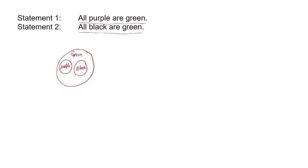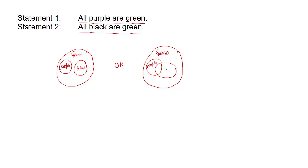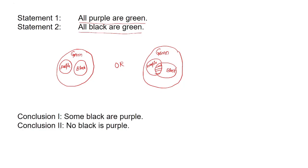None of the statements specify whether there are any common elements between purple and black. So we can draw the Venn diagram with purple and black completely separate inside green, or we can draw it with some overlap between purple and black — where the shaded area represents common elements between purple and black. Both diagrams are possible.